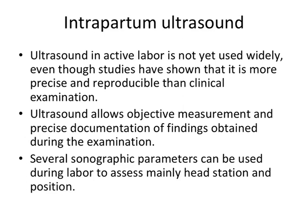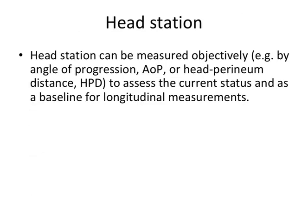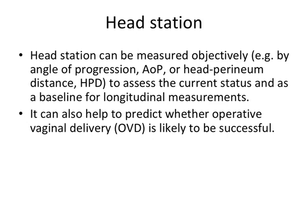Several sonographic parameters have been proposed during labour and they mainly assess head station and head position. Head station can be measured objectively, for example by the angle of progression or by head perineum distance. This helps to assess the current status and can serve as a baseline for longitudinal measurements. It can also help to predict whether operative vaginal delivery will be successful or not.